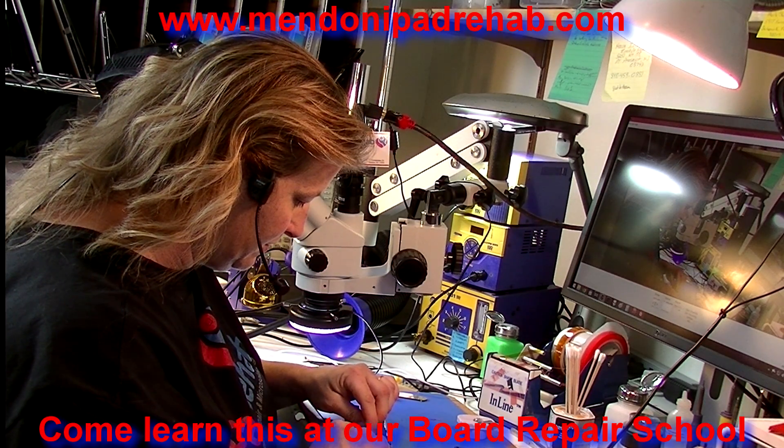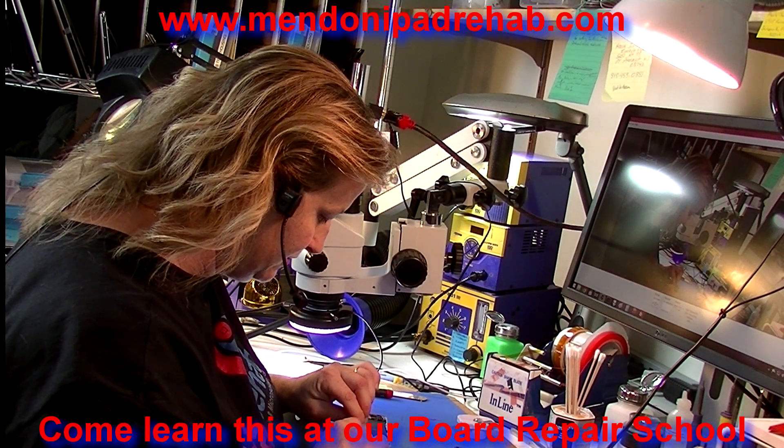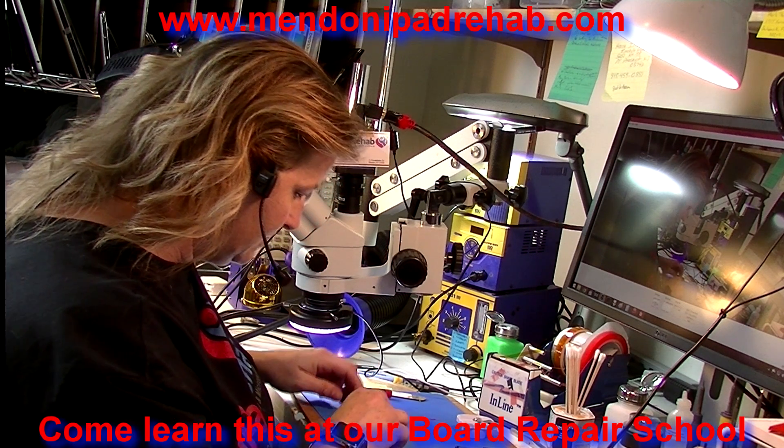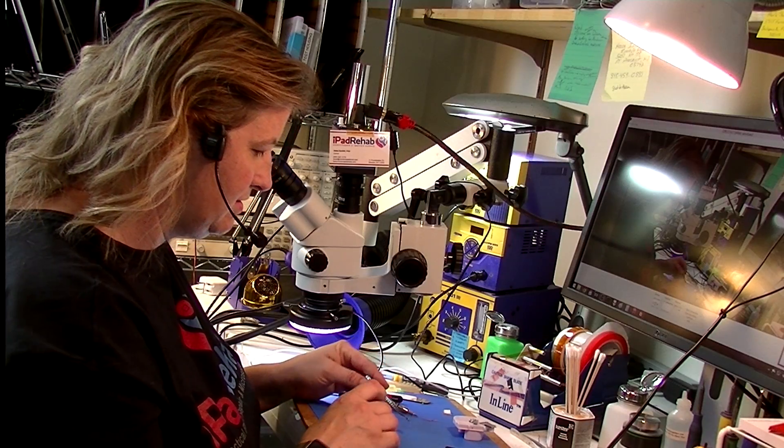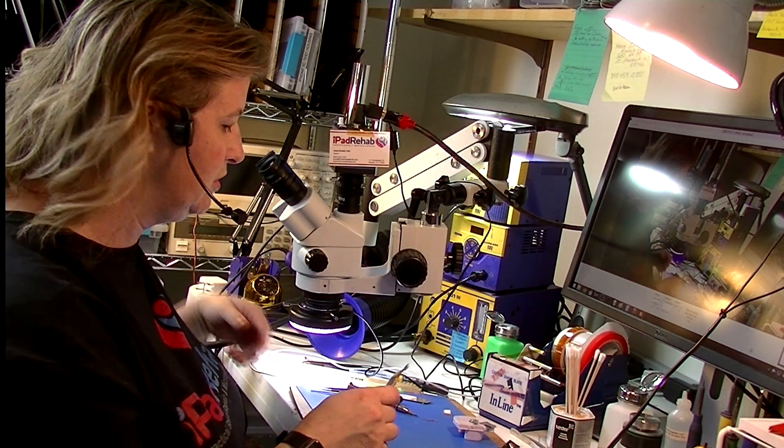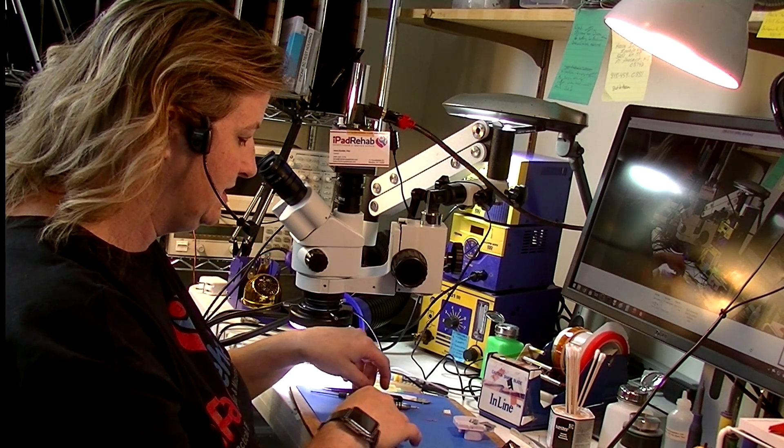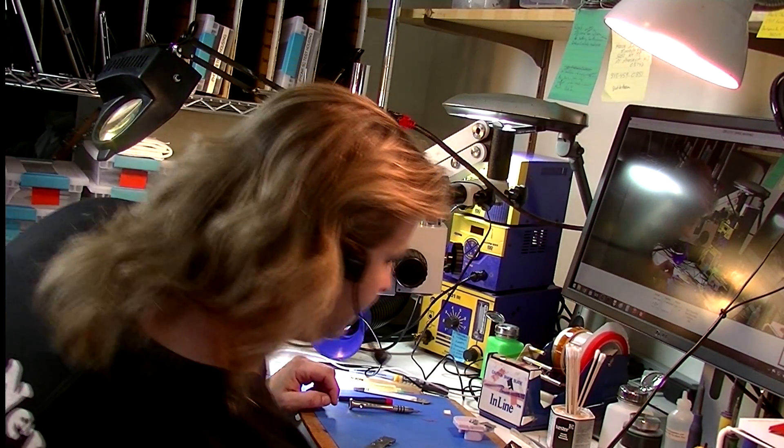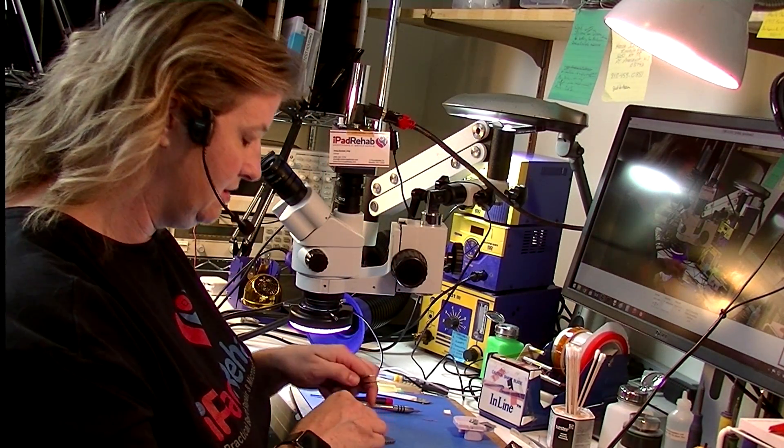But this is a fairly straightforward repair. You do have to take the board out, and that's what I'm doing now. Okay, so here's the board. The board looks normal, and we're going to now desolder the back shield so that we can get to the chip.